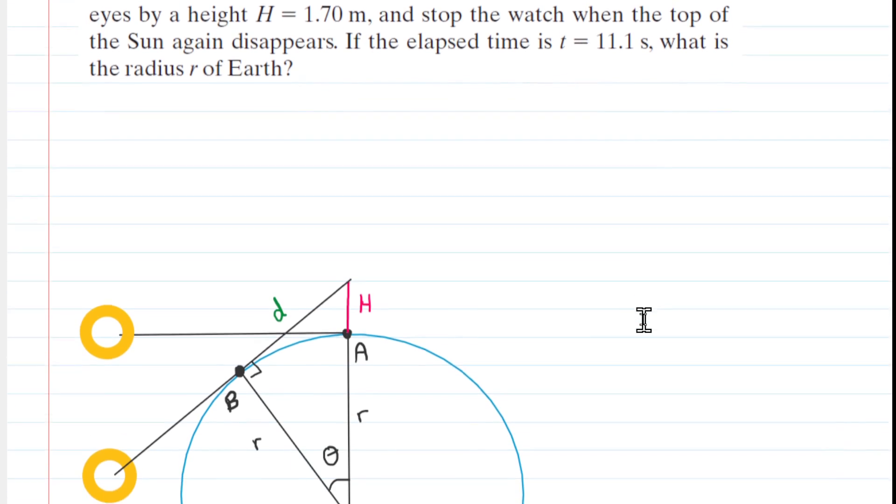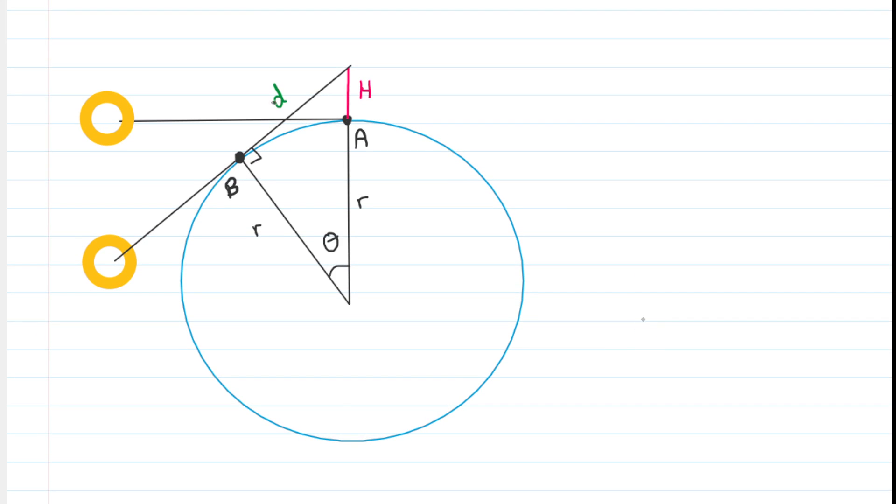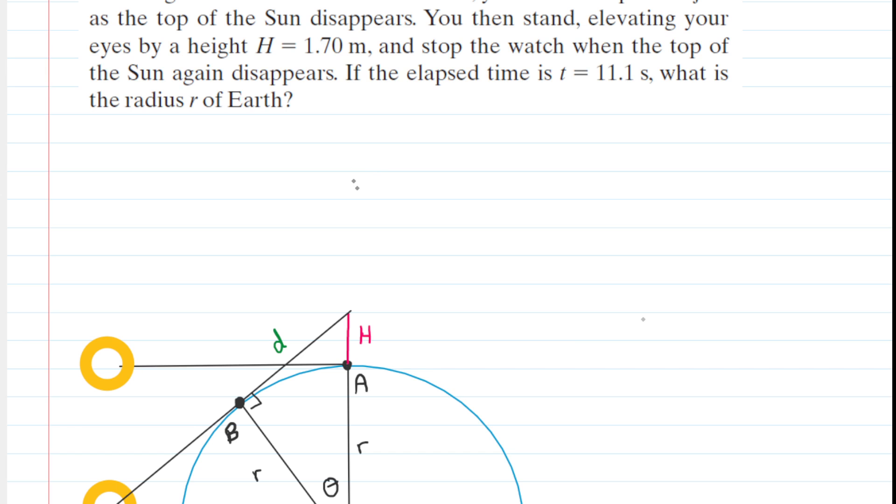We're going to look at this picture here that we have sketched, and you might want to look at point A first. Imagine the individual was lying down on the beach. We'll go ahead and draw her. She's looking horizontally at the sunset right here. She then stands up. So we're going to have her stand up.